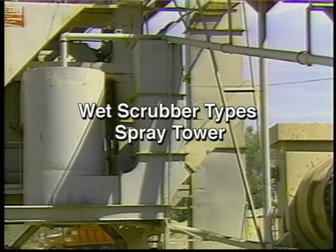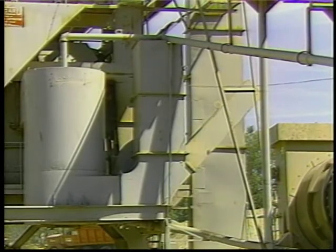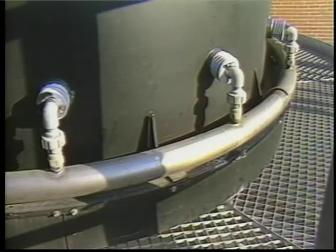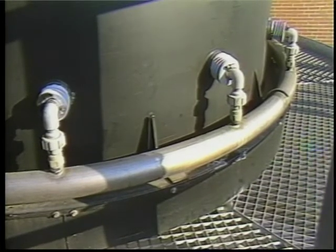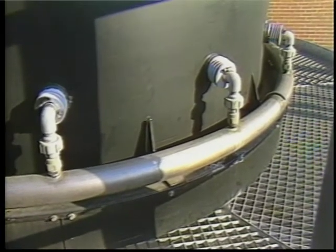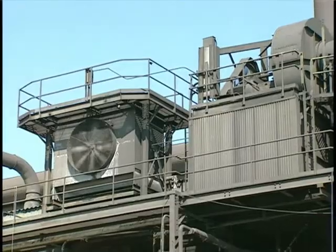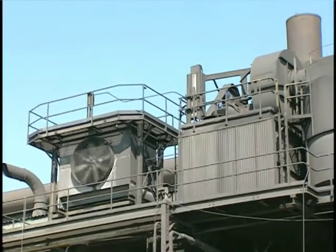The spray tower is a low energy device and is the simplest wet scrubber used for particle collection. It consists of an open vessel with one or more sets of spray nozzles to distribute the scrubbing liquid. Typically the gas stream enters at the bottom and passes upward through the sprays. The particles are collected when they impact the droplets.